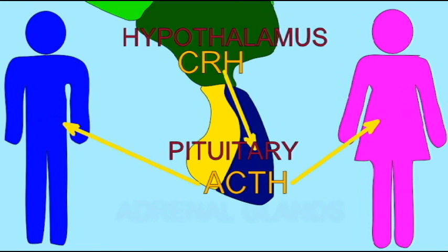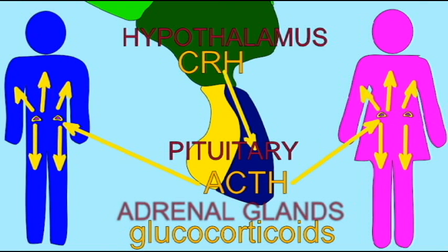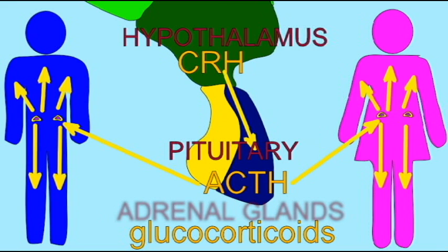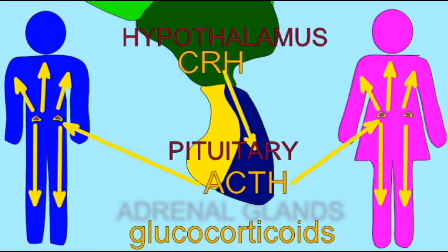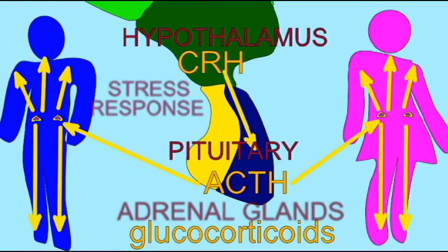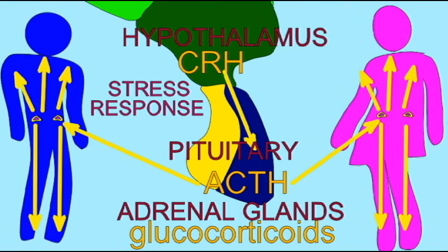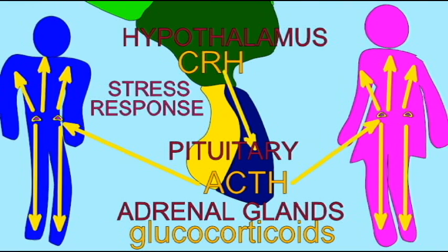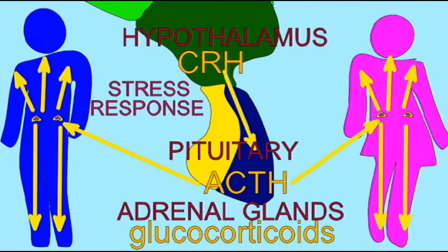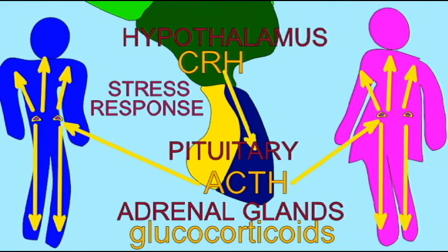ACTH then travels to the adrenal glands where it affects the cortex of the adrenal glands and causes them to release glucocorticoids, such as cortisol and cortisone. These glucocorticoids mediate many of the aspects of our stress responses, including some aspects which have negative physiological consequences, such as weight gain and the suppression of the immune system.